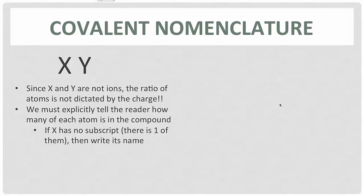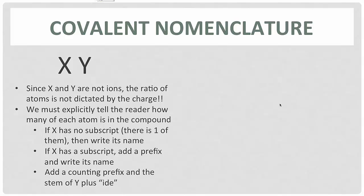Nitrogen and oxygen make a whole family of compounds, that's why we need to be specific and we need to tell people exactly how many of each atom are in the compound we're discussing. If X has no subscript, then there's just one of them—we would just write its name as it is. If X has a subscript, like N₂O, that first element that's there, N₂, that two is a subscript. We would add a prefix to tell people how many we have, and the prefix for two is 'di'. Then you would just write its name. For Y we need to add a counting prefix as we did before—tell people how many there are, mono, di, tri, and so forth—but we also then have to take the stem of that element and then add the 'ide' just as we did before with the ionic compounds.